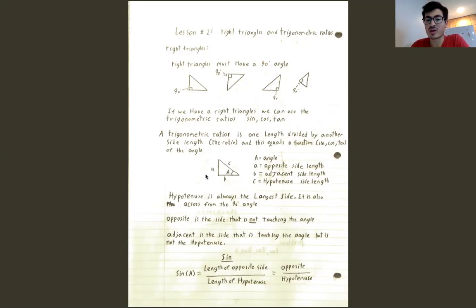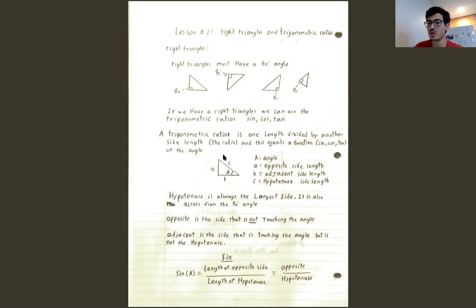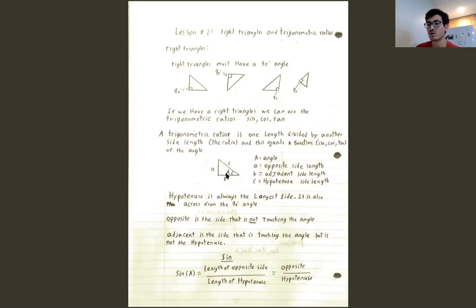To give you an example: here we have a right triangle with side lengths A, B, and C and angle capital A. Looking at angle A, we label the sides. The opposite side — little a — is the side across from our angle, so none of its edges are touching the angle. Adjacent — B — is the side touching the angle but is the shorter of the two sides touching it. The hypotenuse is the longest side, across from the 90-degree angle.